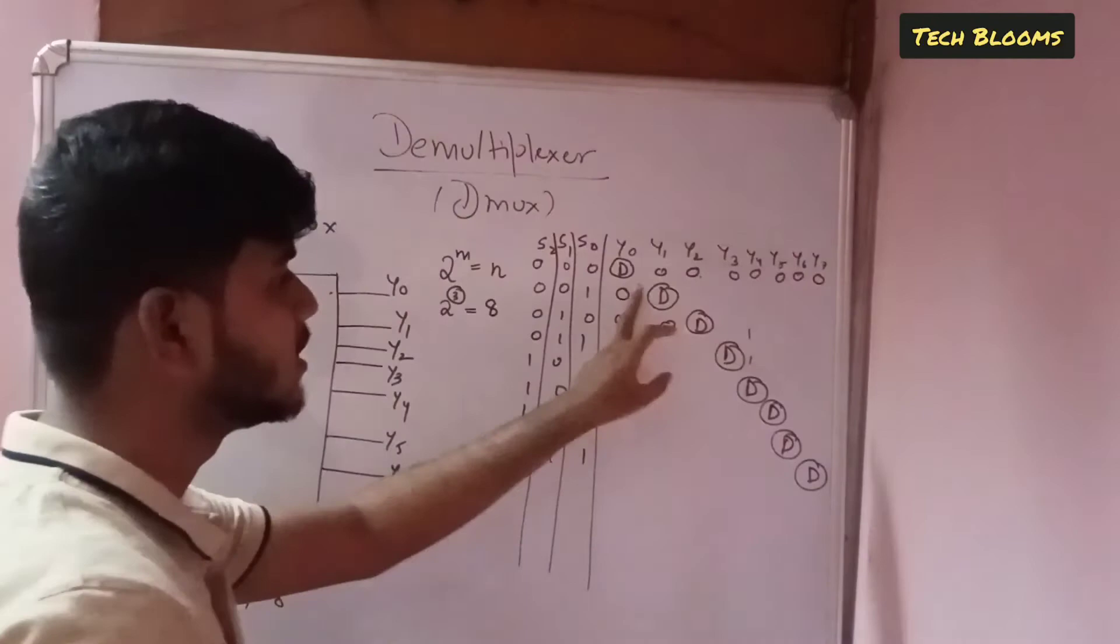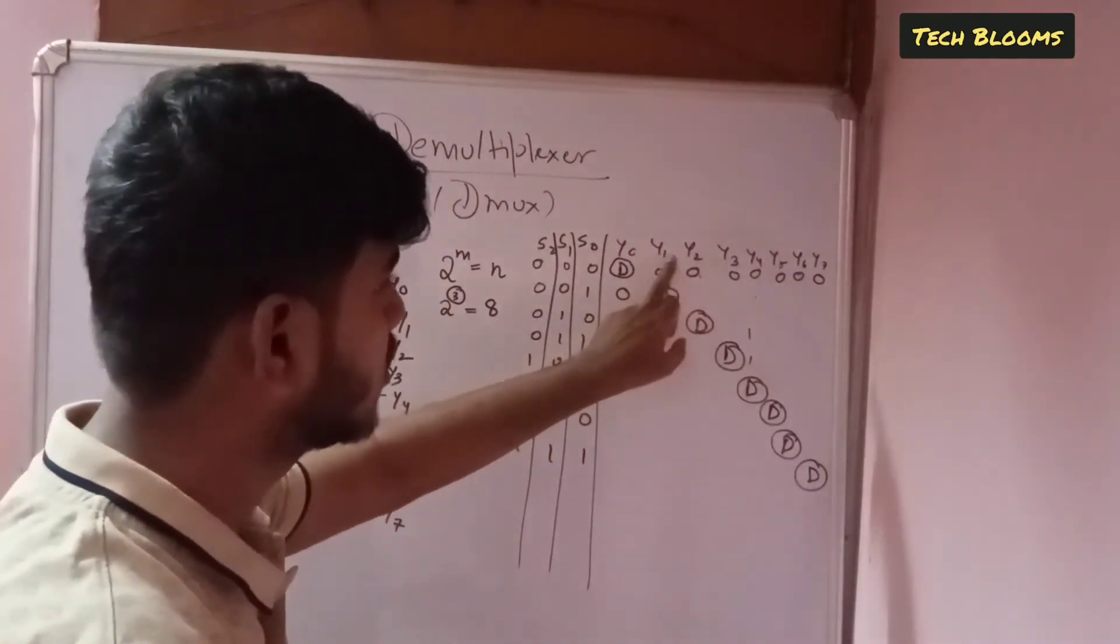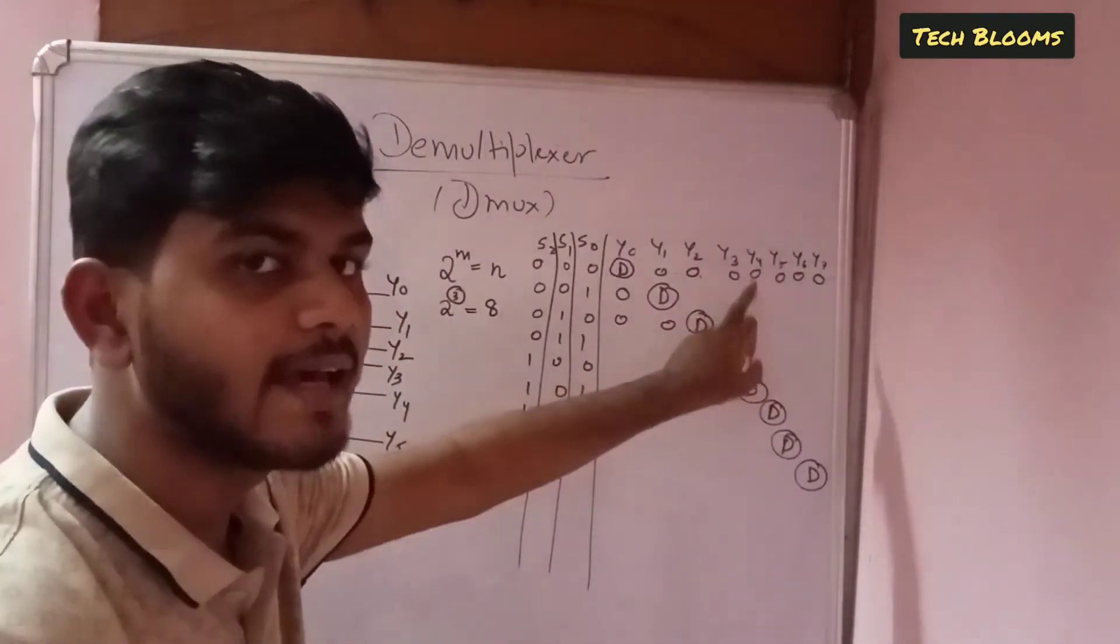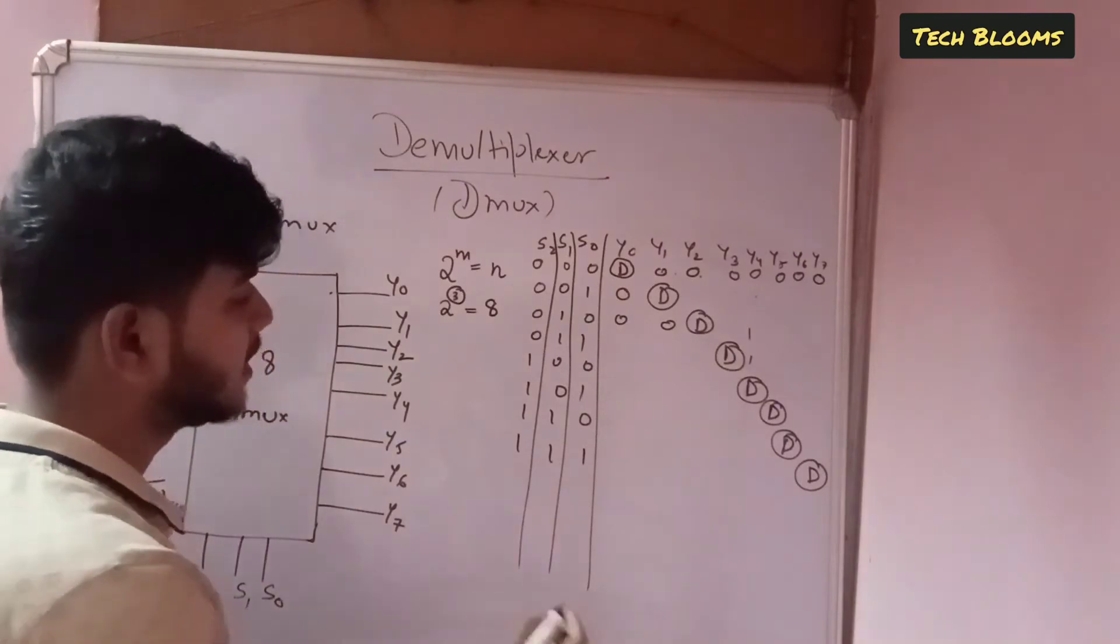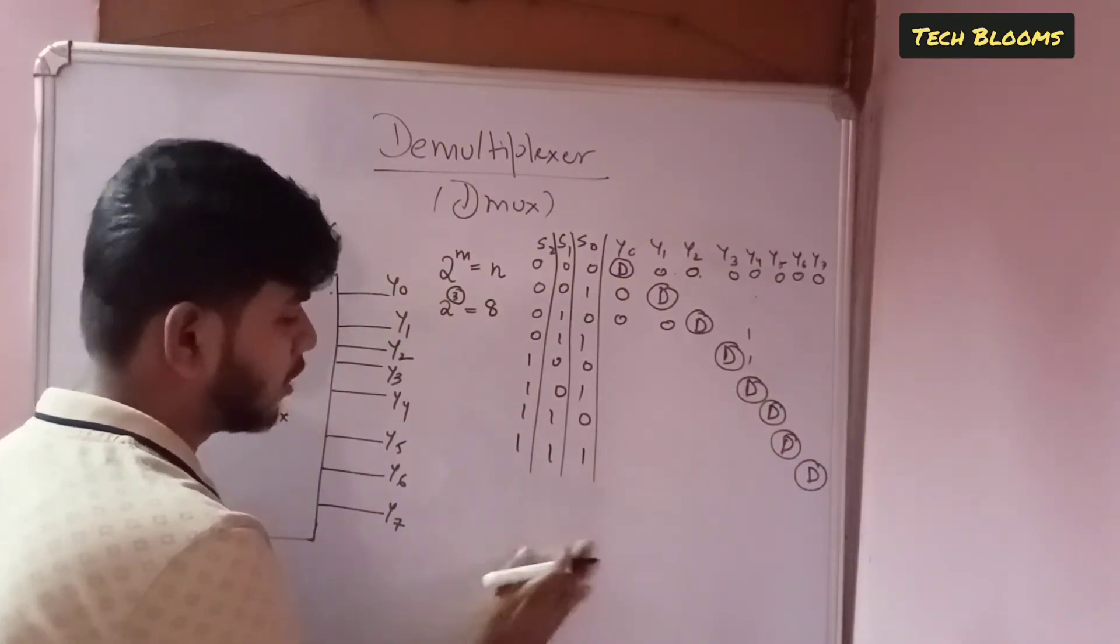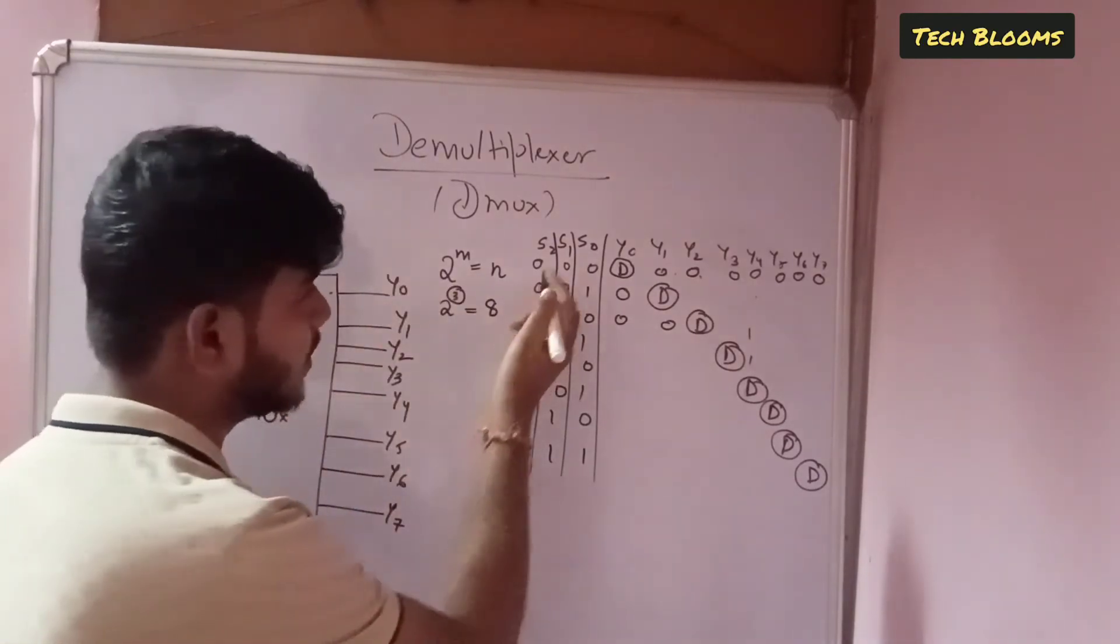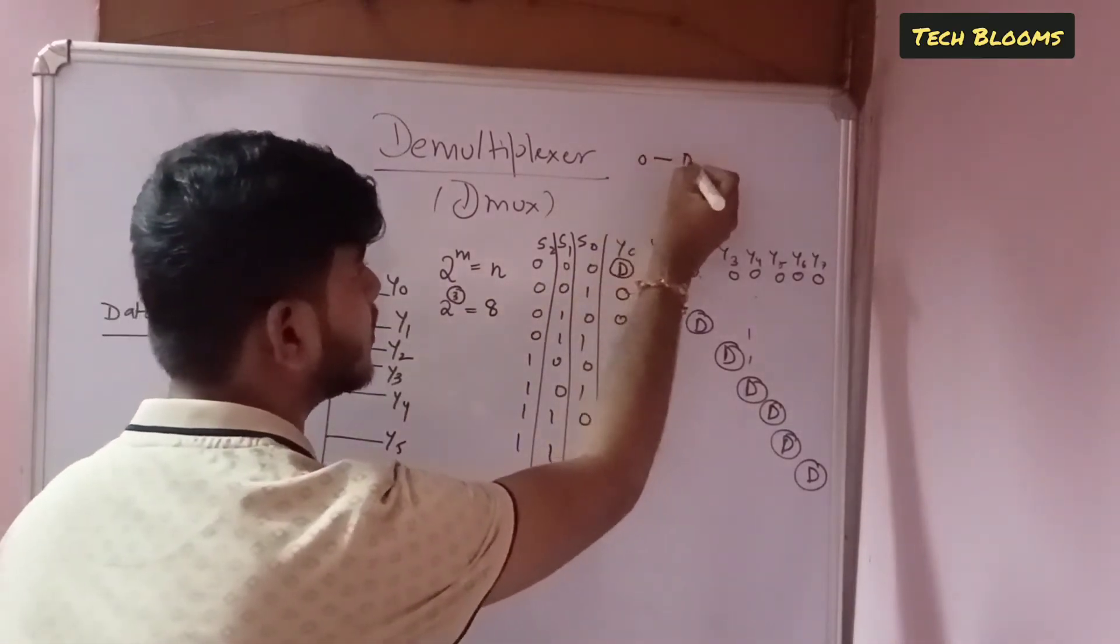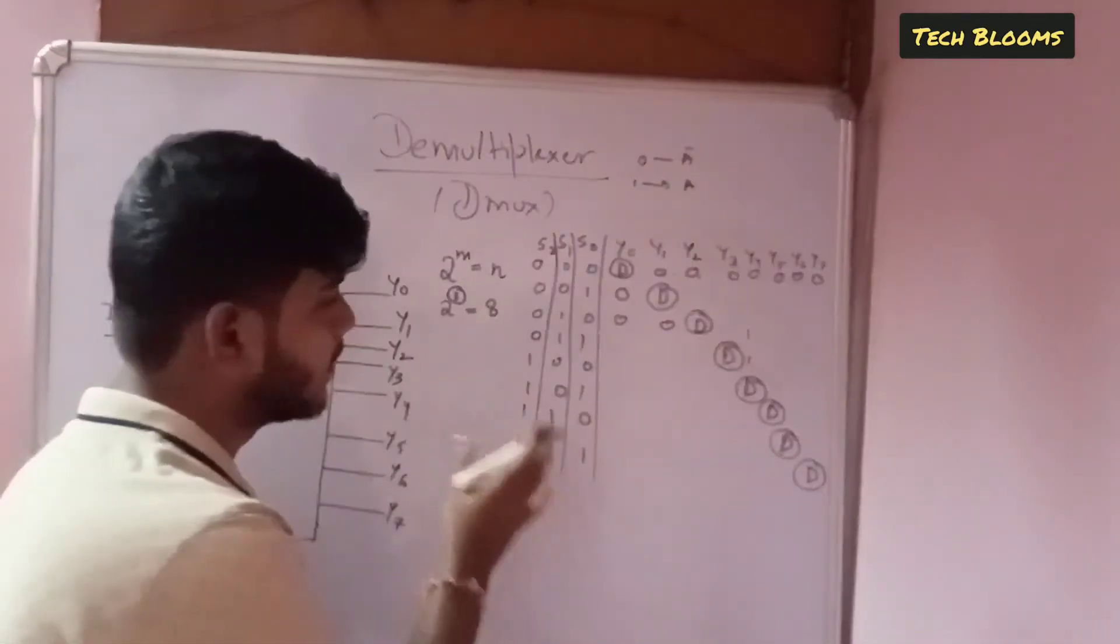So depending upon this d, now we can get the expression for y0, y1, y2, y3, y4, y5 and y6. So how to get that expression is basically nothing but we are considering here 0 as the, from the input only we are getting the output that is we will be considering 0 as a bar 1 as a. So that is complement and without complement.